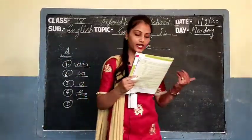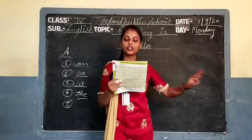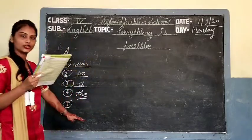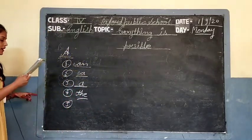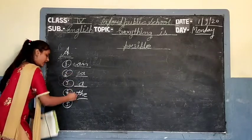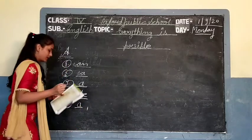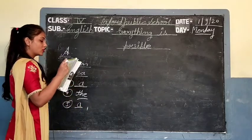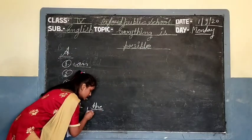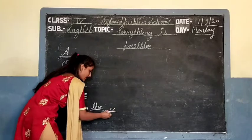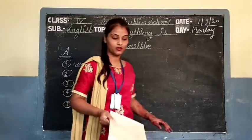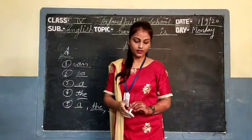Fifth: 'Anjali went on ___ safari' — इसमें three fill-ups हैं। तो three fill-ups में जो correct articles हैं वो write कर रही हूँ। First fill-up: 'Anjali went on a safari' — a. Second: 'the safari was ___ great experience' — the. Third fill-up: 'a great experience' — a. यह हुए आपके articles fill-ups.